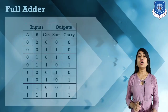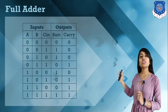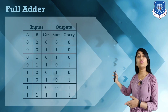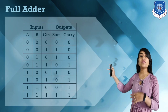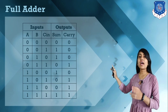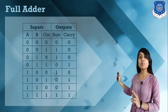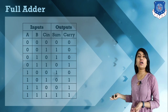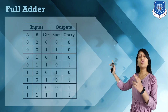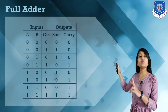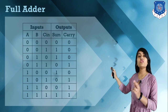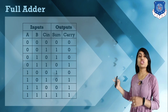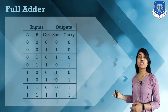Here we have a truth table for the full adder with three input conditions. For three inputs we have eight possible combinations. Inputs are A, B, and C_in, and outputs are sum and carry. For example: 0+0+0 gives sum 0 carry 0; 0+0+1 gives sum 1 carry 0; and so on for all eight combinations.